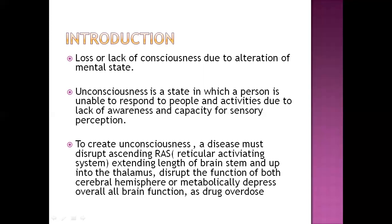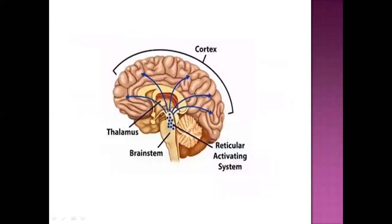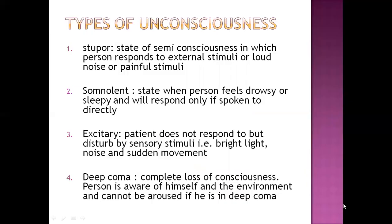This is the anatomy of the brain. This part is the cortex, there is the cerebrum which is the largest part of the brain, there is the thalamus and brainstem. The blue dots indicate the location of the reticular activating system. There are types of unconsciousness: stupor, somnolent, excitory, and deep coma.